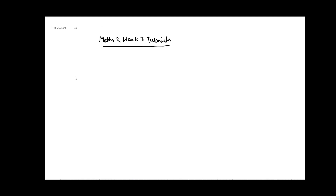In the first tutorial video we will take an example of a function and try to see its local maxima or minima. Let us consider the function f(x) = x³ + x² + 1. This is a polynomial function of degree 3.